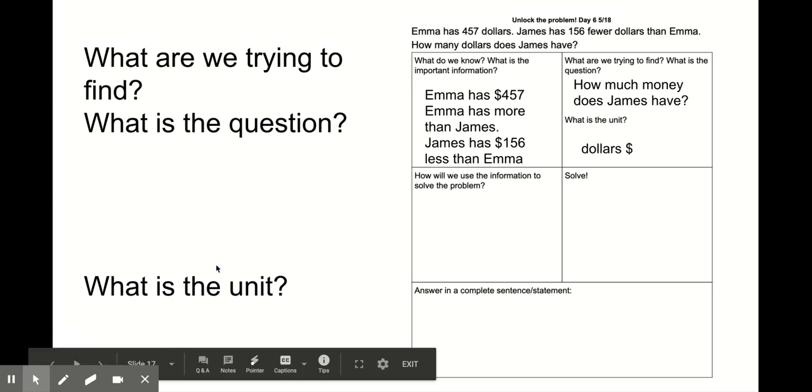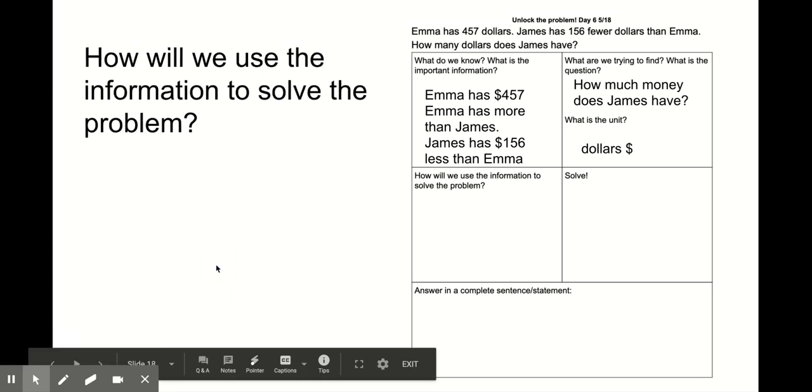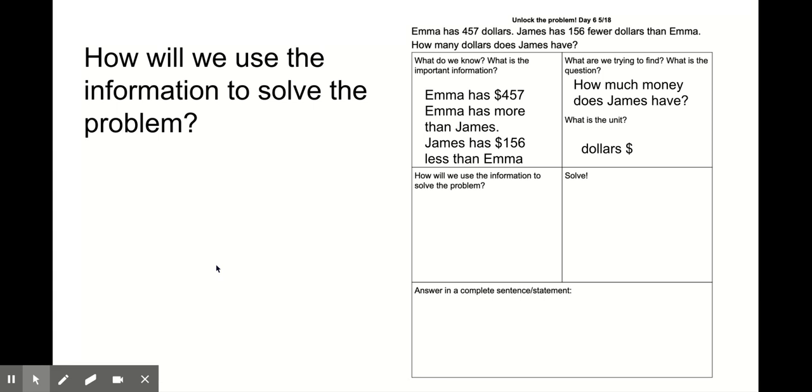So now that we have what we're trying to find and what is the unit, we need to think about how we will use this information to solve the problem. If we're solving the problem and we need to find out how much money James has, do you think we will add or subtract? We will probably subtract because we know the amount that Emma has and we know that James has a certain amount less. So we know the whole and we know one part. We need to find the second part. So we'll subtract.